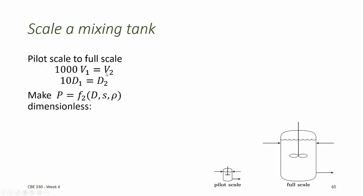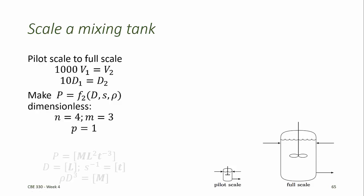While the volume of the full scale tank is 1,000 times the volume of the pilot scale tank, the diameter of the full scale tank is only 10 times the diameter of the pilot scale tank. For the power required for the mixer, the relationship between power, diameter, mixing rate, and density contains 4 variables representing m = 3 base dimensions: mass, length, and time. According to the Buckingham Pi theorem, we should be able to formulate a single dimensionless quantity describing the relationship among these 4 variables, which we want to hold constant between the pilot scale and the full scale.